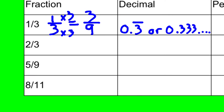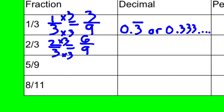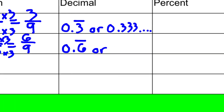Now, fraction to decimal for two-thirds. Again, hoping you just know this one, but if you don't, take two-thirds and make it a fraction out of nine by multiplying by three, and that's six over nine. The pattern of nines tells us that you take the numerator, and that will be the repeating digit — zero and six-tenths repeating.